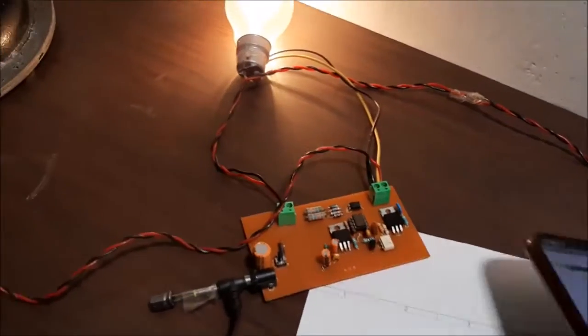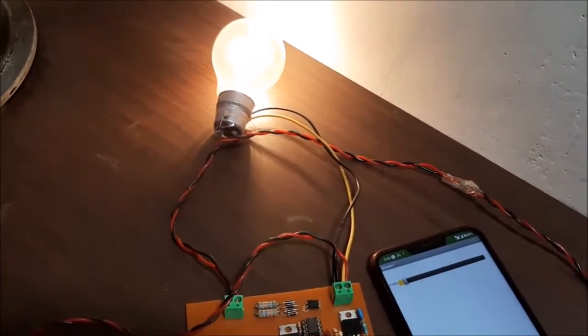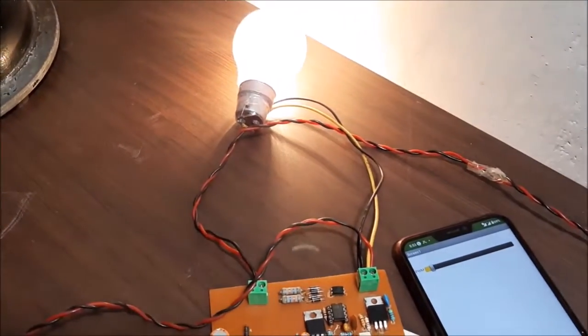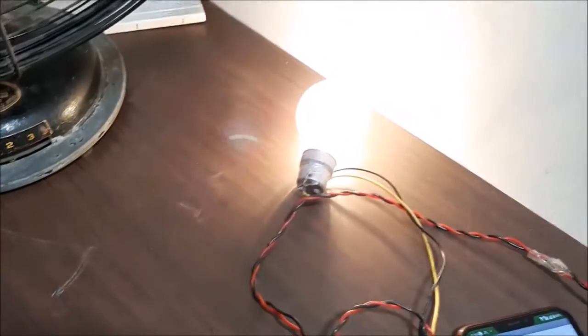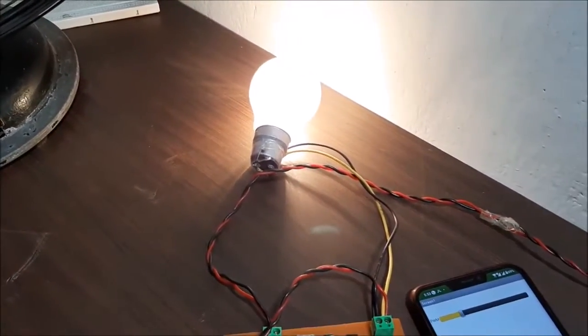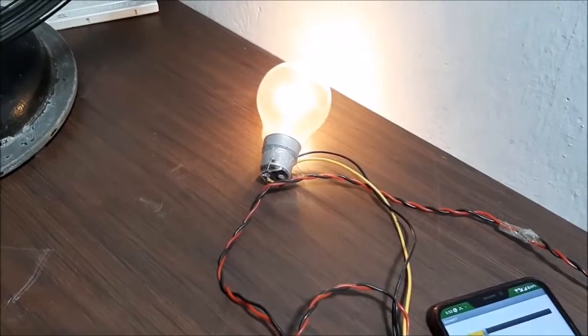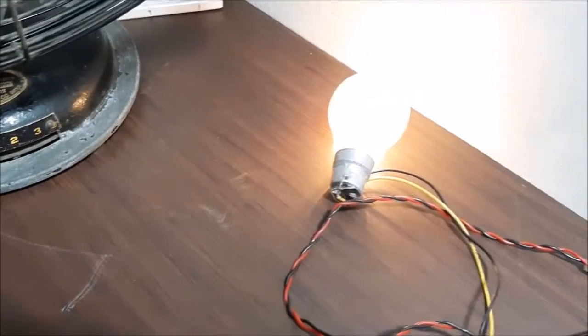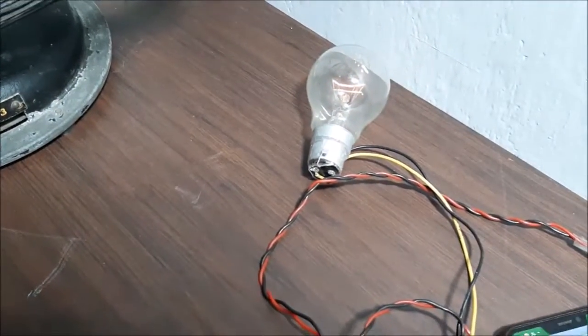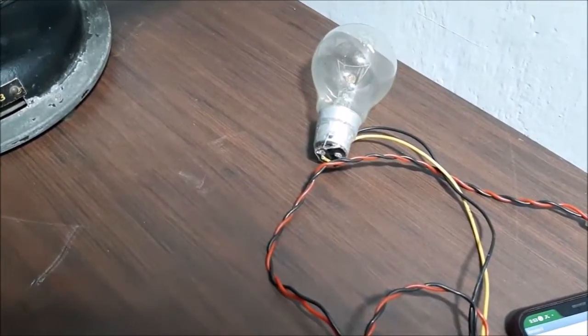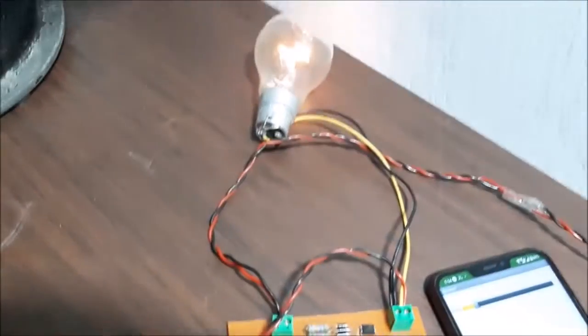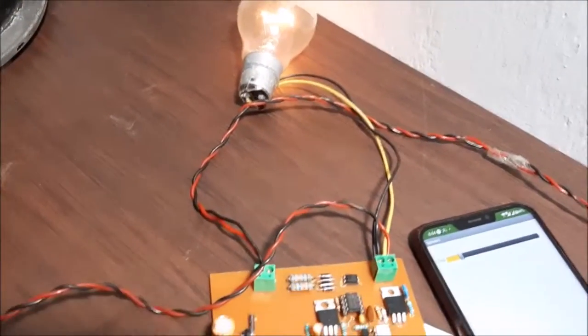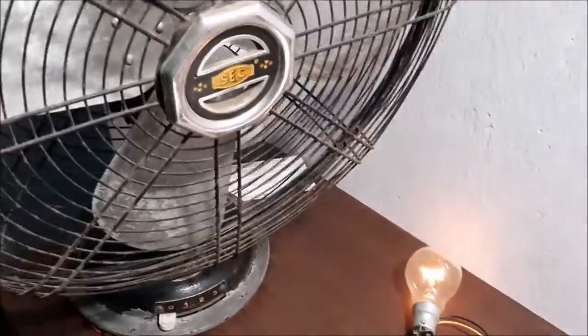I can change the brightness of the bulb as you can see, turn it off completely. If I put the slider in zero position it gets completely turned off and this is slightly bright. I also have a table fan connected right here.